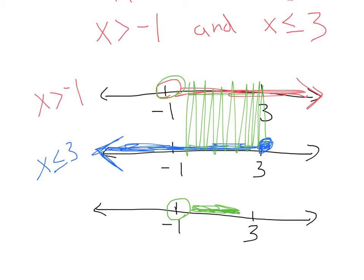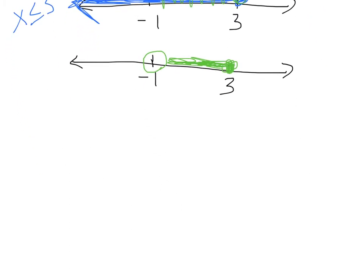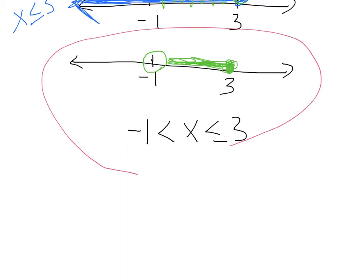For my final answer, I'm going to have an open dot at negative 1, because that's an open dot above. Then all of this in-between is included because it's an and statement. At 3 we keep a closed dot, because we have a value at 3 in both graphs above. This is my final graph. I can write: negative 1 is less than x is less than or equal to 3, or x is between negative 1 and 3.